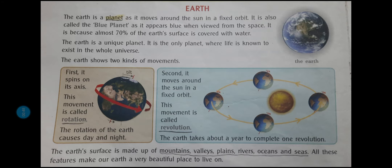Earth — everybody knows what it is. It is a planet on which we human beings exist and live, and it is also called the blue planet. Aapko pata hai isse blue planet bhi kaha jata hai — because when it is viewed from space, it looks blue, more of a blue color. Why? Because almost 70% of the earth's surface is covered with water. That is why it can be seen as blue in color. Is liye isse hum log blue planet bhi kete hai. Now the earth is a unique planet.